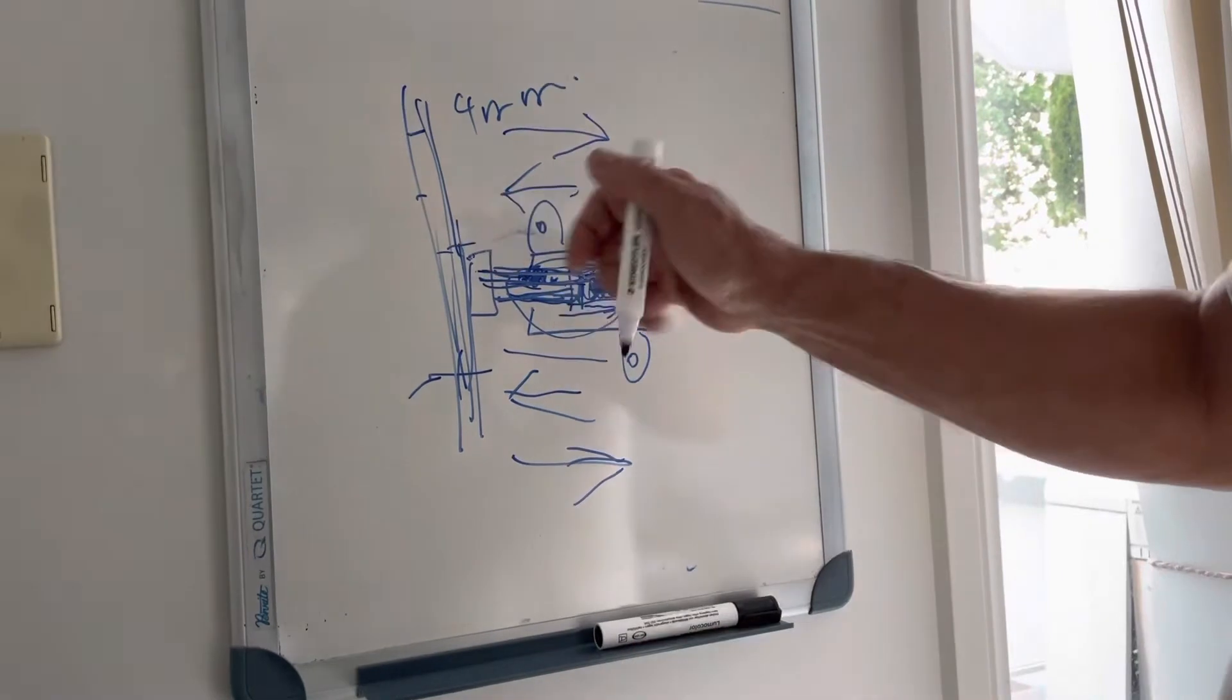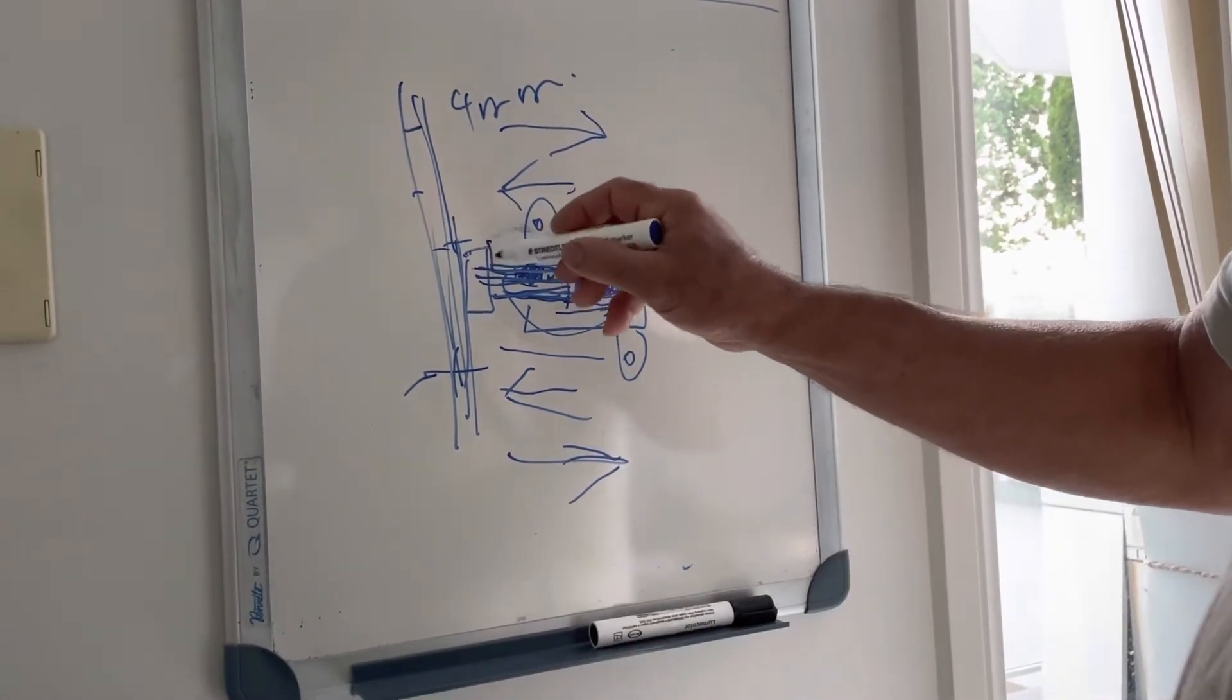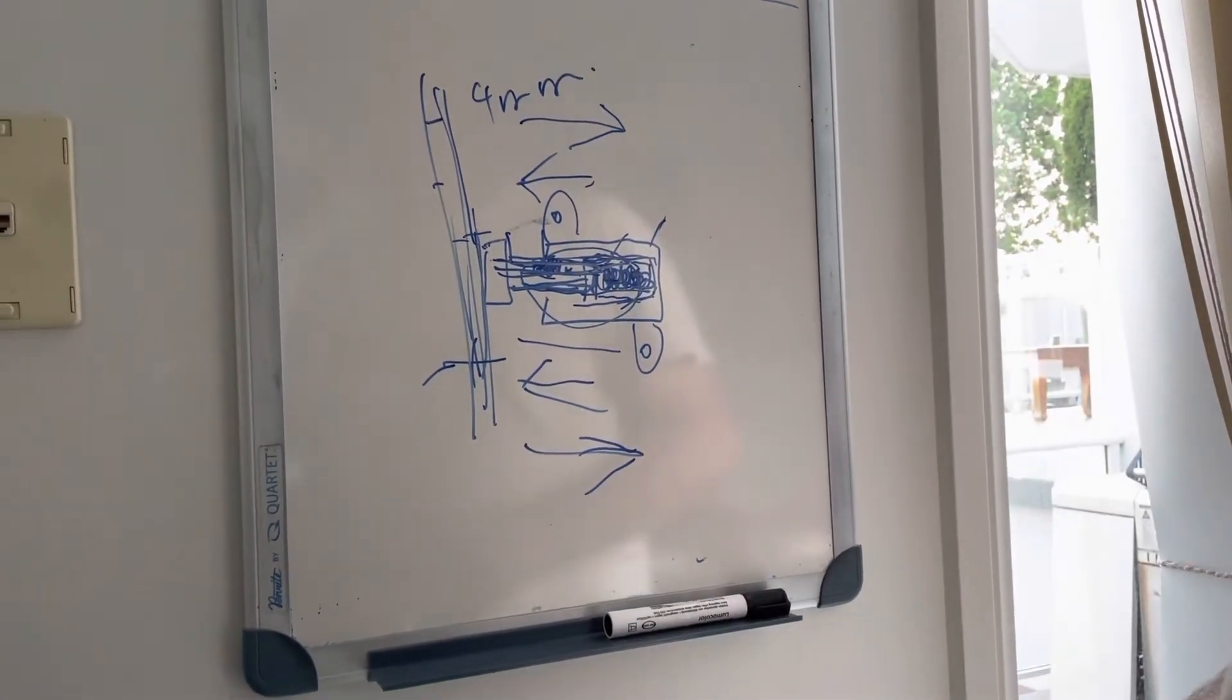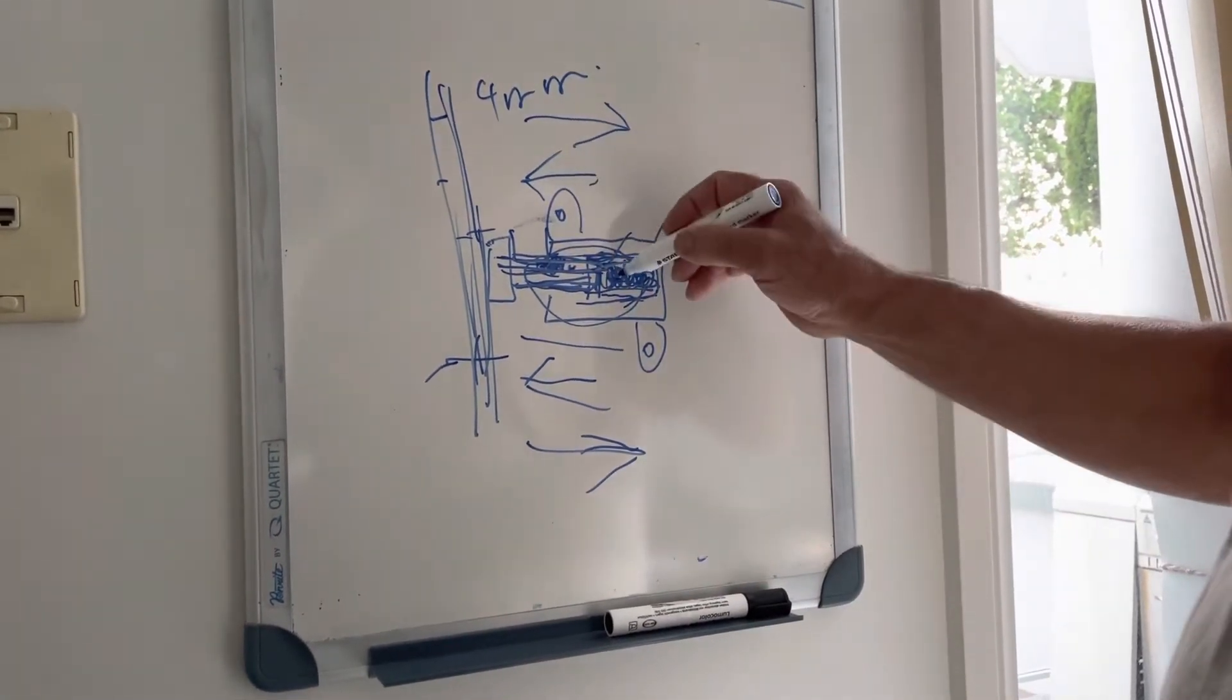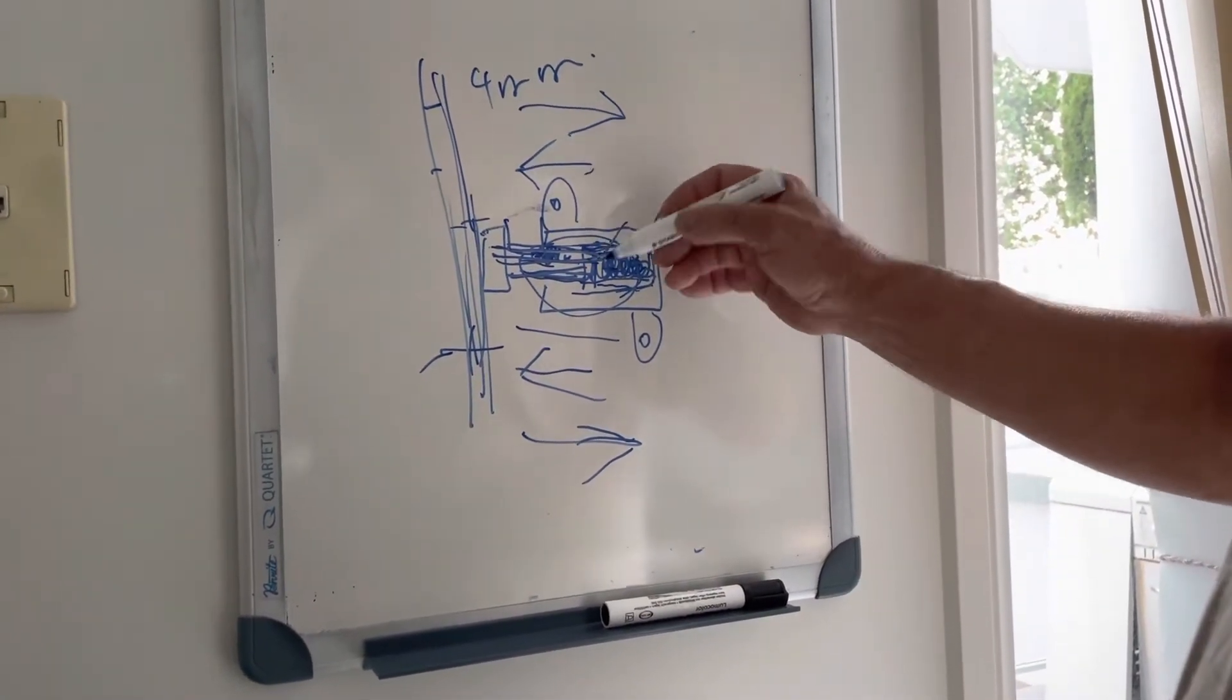Set everything up and then you measure your distance from there to there. What you do is you make a sleeve for the back of it that pushes against this piston here.